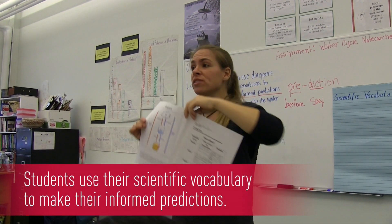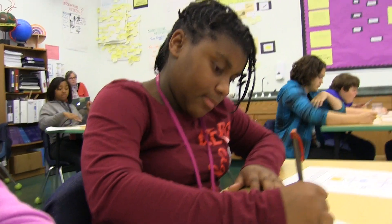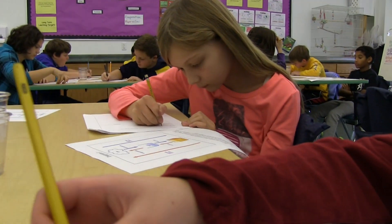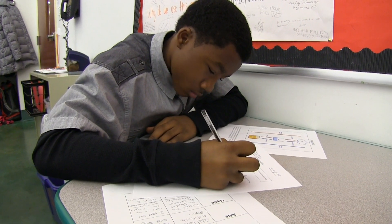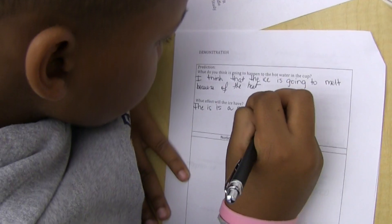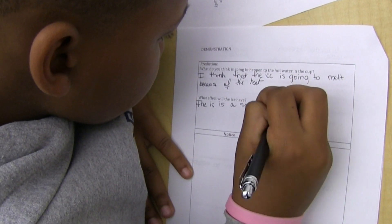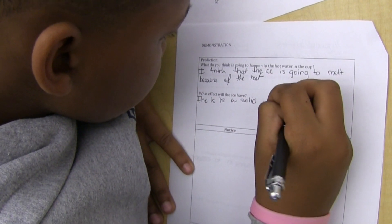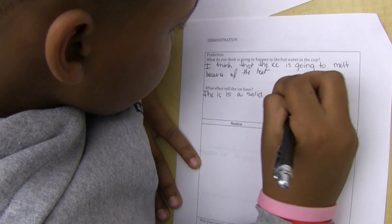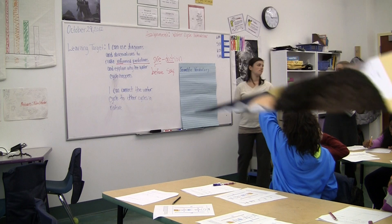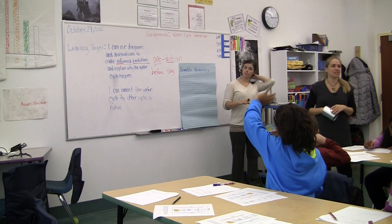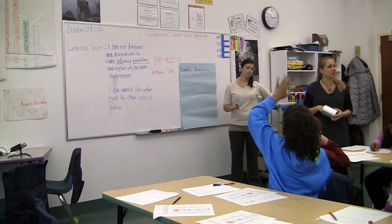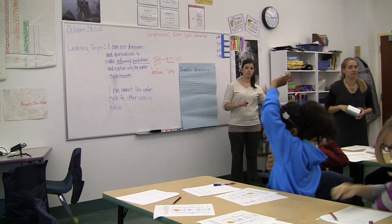Students have two resources to make their informed prediction: the diagram and their vocabulary list from the previous class. They should use both to answer the two questions posed.